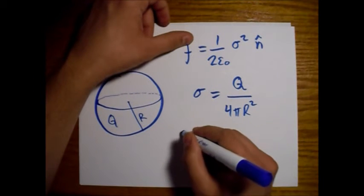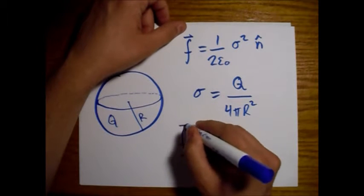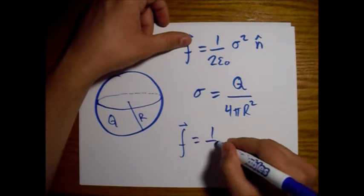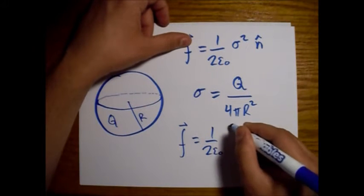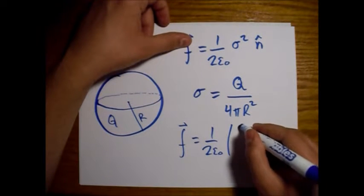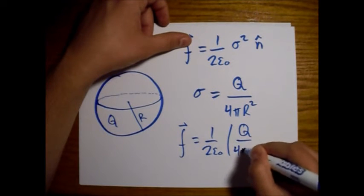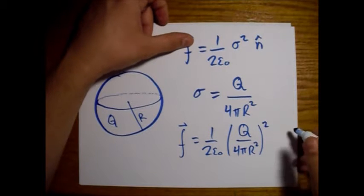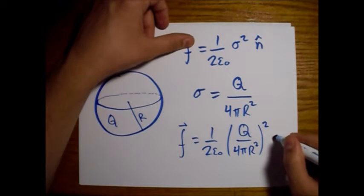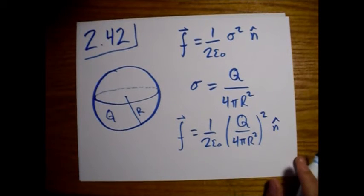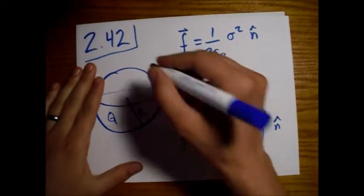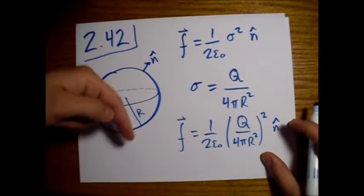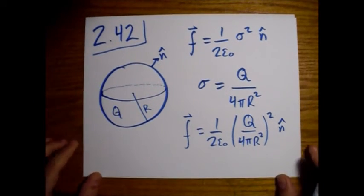All right, so finding the force per unit area: one over two epsilon naught, and then we have Q over four pi R squared, squared. Okay, in the unit normal direction. I'll go ahead and draw that just radially outward from the surface.